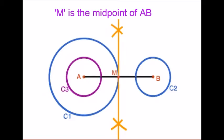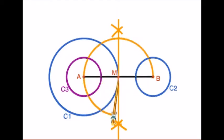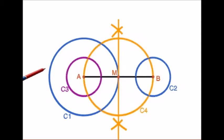The point M is the midpoint of line AB. With M as center, draw a circle which passes through the points A and B — call it circle C4. Now carefully identify the points where circles C3 and C4 intersect. Let them be P and Q.